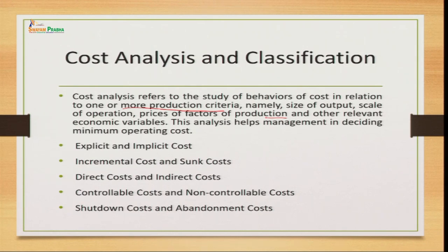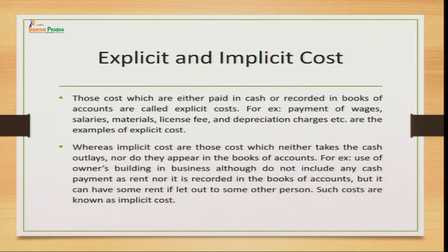We will categorize cost into different types: explicit and implicit cost, incremental cost and sunk cost, direct cost and indirect cost, controllable cost and non-controllable cost, and shutdown cost and abandonment cost. Let us start with the very first one — explicit and implicit cost. Explicit costs are the external costs — the costs which we are paying to outsiders. All those costs are considered explicit cost.